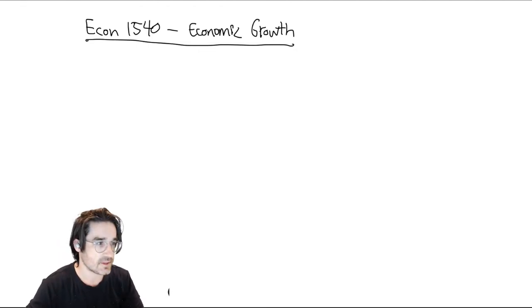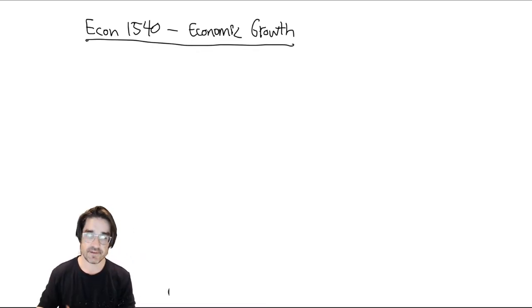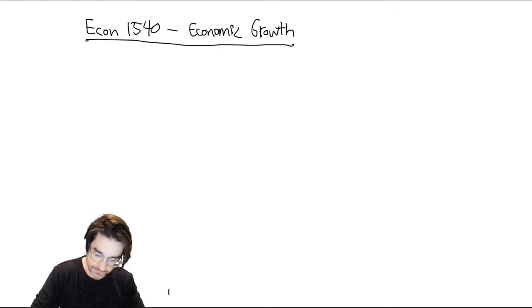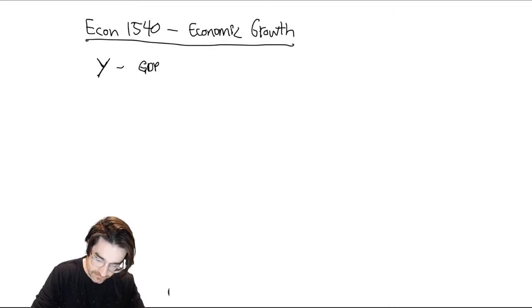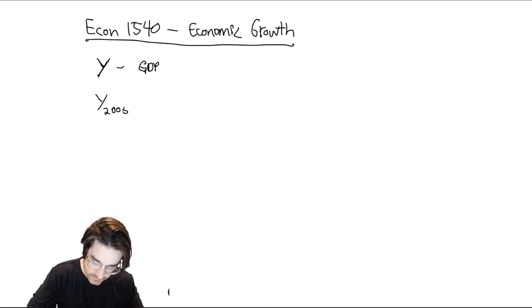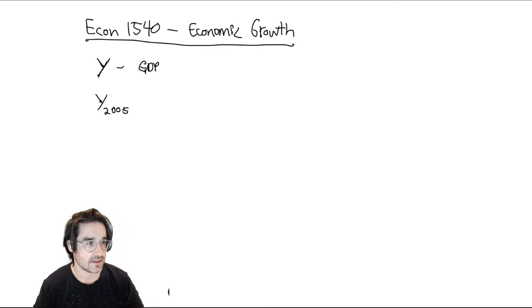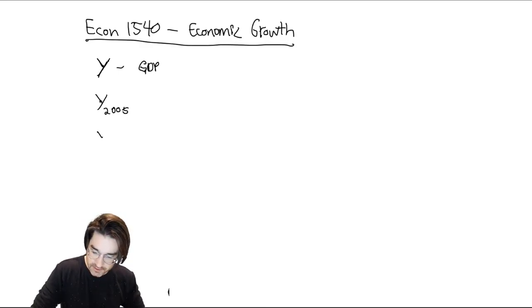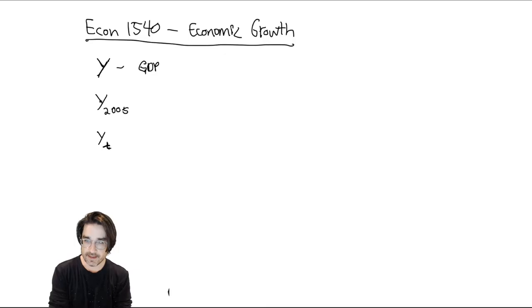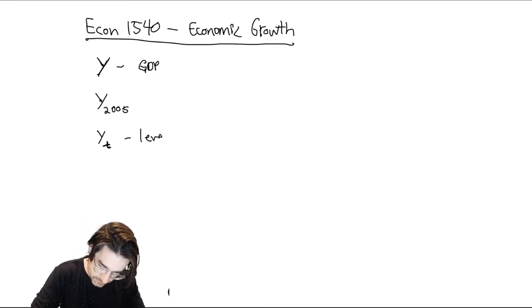First, we have to do this intro to some mathematical notation before we go into Malthus. We're going to be thinking about different mathematical representations of series — like a series of GDP numbers from year to year over time. In general, Y will be GDP — that's capital Y. For instance, you might write Y sub 2005, which is GDP in the year 2005. Or more abstractly, Y sub T — GDP in some year T. So that's the level of GDP at a given time.